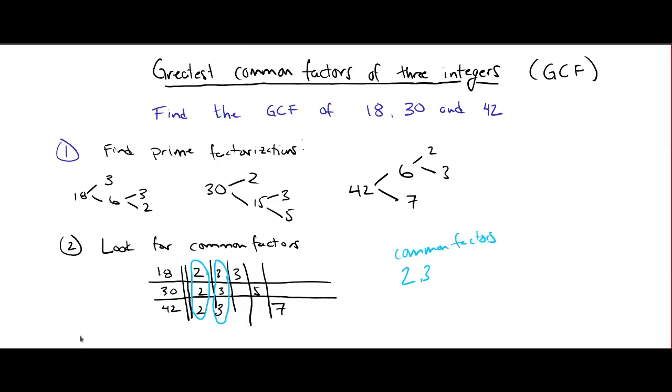And so the last step, we are going to multiply these common factors. So the GCF, the greatest common factor, is 2 times 3, which equals 6. And we're done.